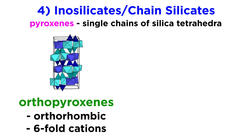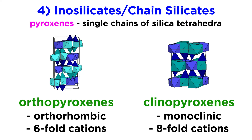Orthorhombic pyroxenes are called orthopyroxenes, and they have 6-fold cations on both their X sites, making them more symmetrical than monoclinic pyroxenes, or clinopyroxenes, which have 8-fold cations, typically calcium, on their X site.